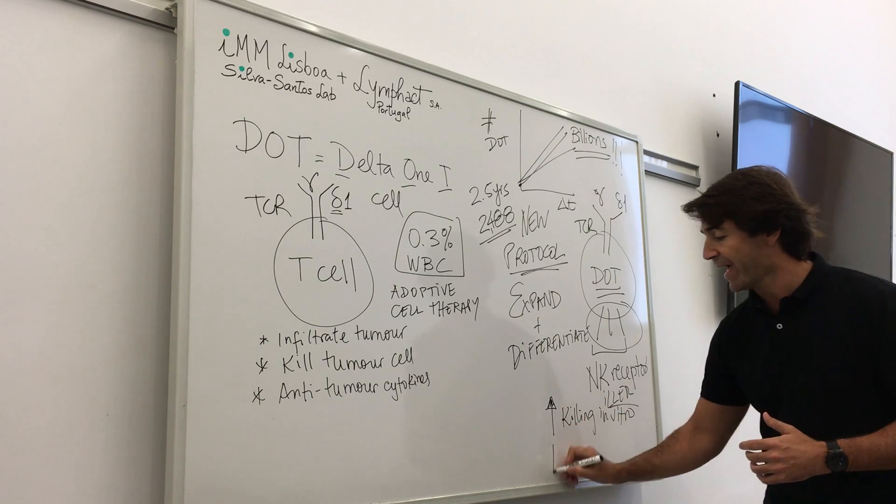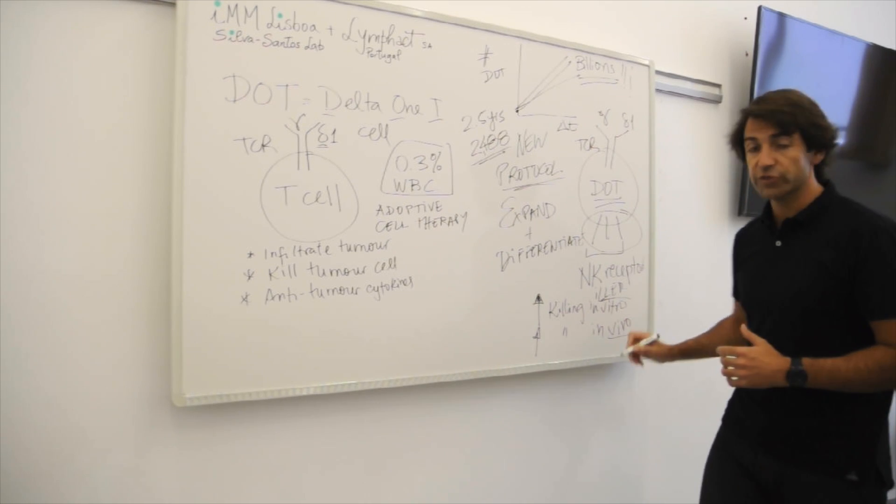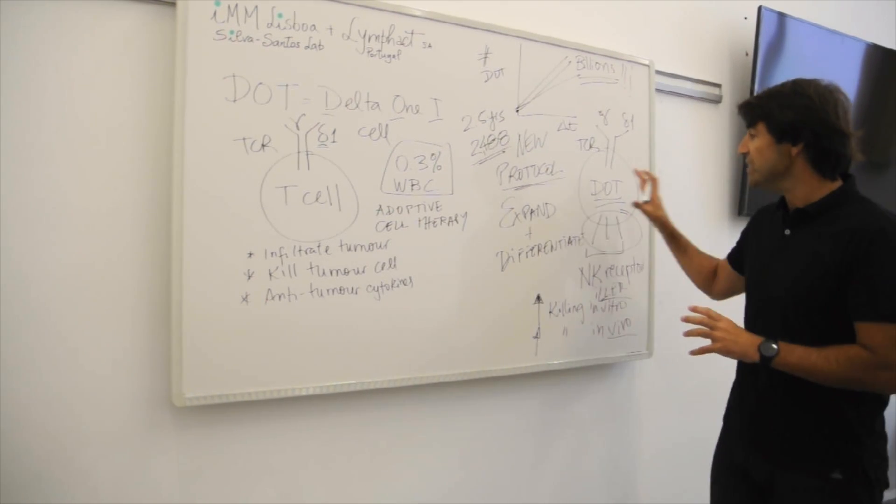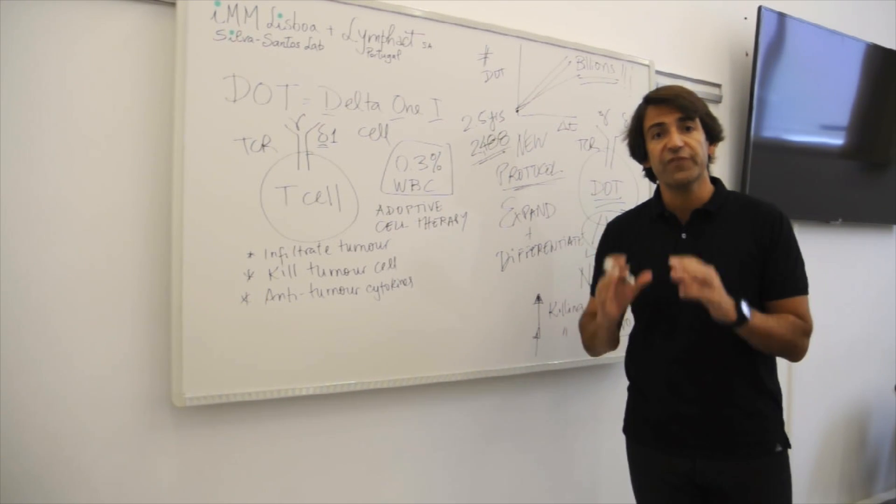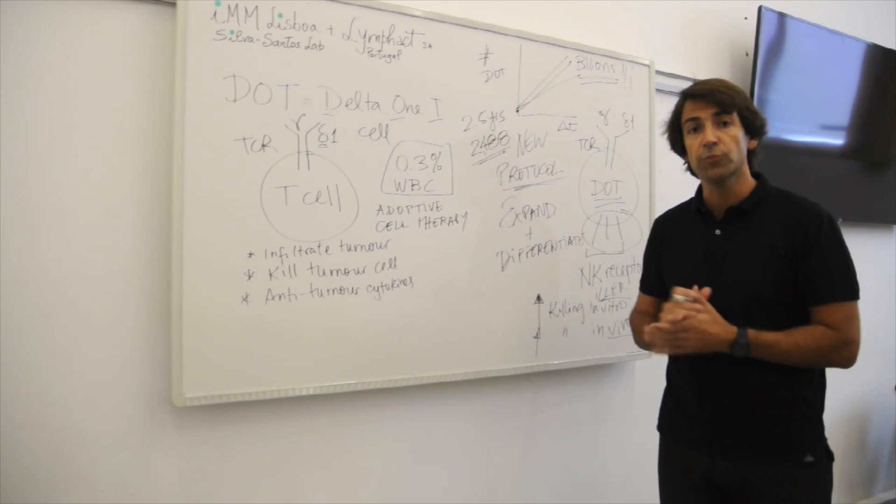And very importantly, enhanced killing in vivo, in experimental models of cancer. So we actually started with leukemia, and we showed these cells are able to prevent leukemia dissemination in a host, in an immunodeficient mouse.